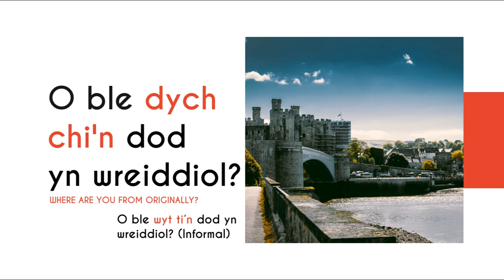To ask someone where they are from originally, you would say, O ble dych chi'n dod yn wreiddiol? This is the most polite way of asking someone. And the informal way would be, O ble wyt ti'n dod yn wreiddiol? You can actually drop the last part, yn wreiddiol, if you like — the meaning is still the same. Yn wreiddiol just means 'originally', so dropping that changes the question from 'Where are you from originally?' to simply 'Where are you from?'